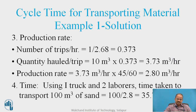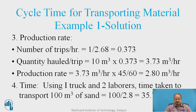The production rate: number of trips per hour is 1 divided by 2.68, giving 0.373 trips per hour. Quantity hauled per trip is 10 cubic meters multiplied by 0.373, giving 3.73 cubic meters per hour. Production rate is 2.8 cubic meters per hour. Using one truck and two laborers, the time taken to transport 100 cubic meters of sand is 100 divided by 2.8, which is approximately 35 hours.